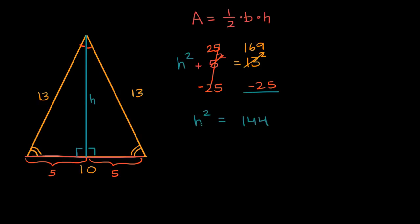If you're doing it purely mathematically, you say h could be plus or minus 12, but we're dealing with a distance, so we'll focus on the positive. So h is going to be equal to the principal root of 144. So h is equal to 12.